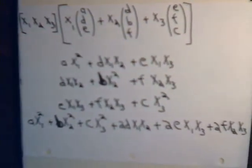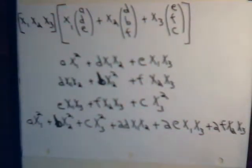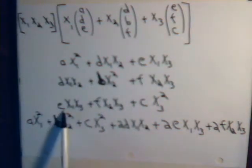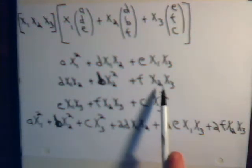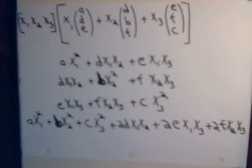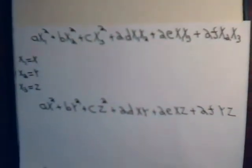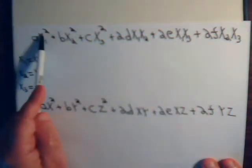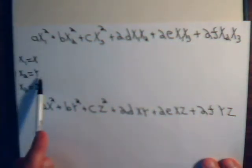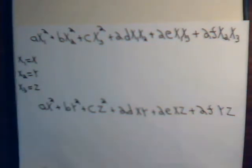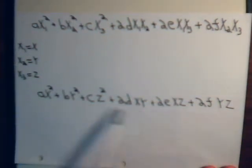There, let's do that again: a, b, c, x1 squared, x2 squared, x3 squared, 2d times x1 x2, 2e times x1 x3, plus 2f times x2 x3. So, we have this expression, or we can rewrite it: x1 is x, x2 is y, x3 is z. We have this expression.